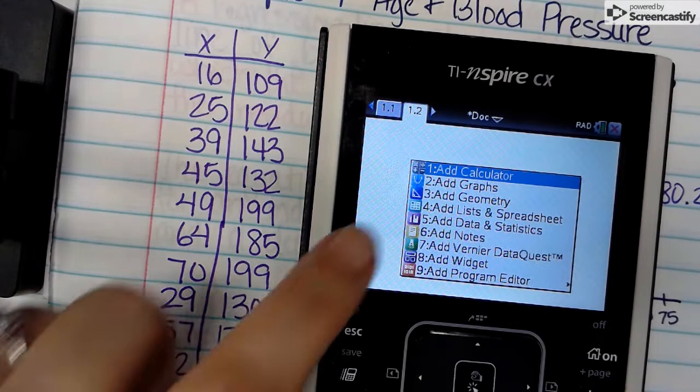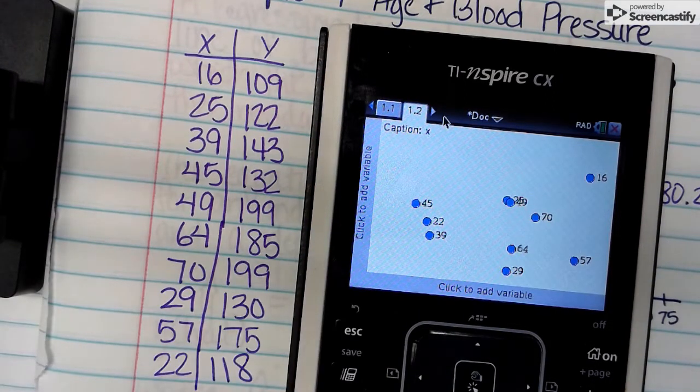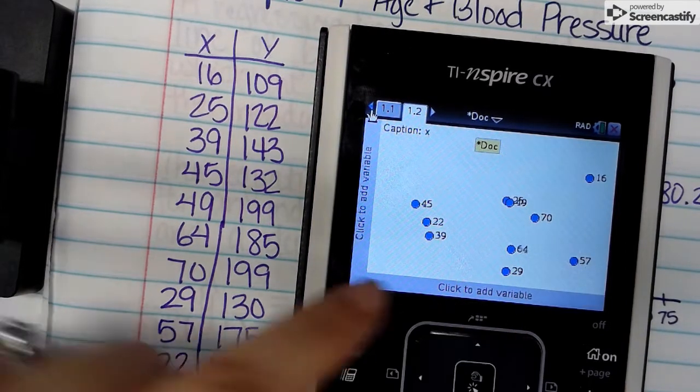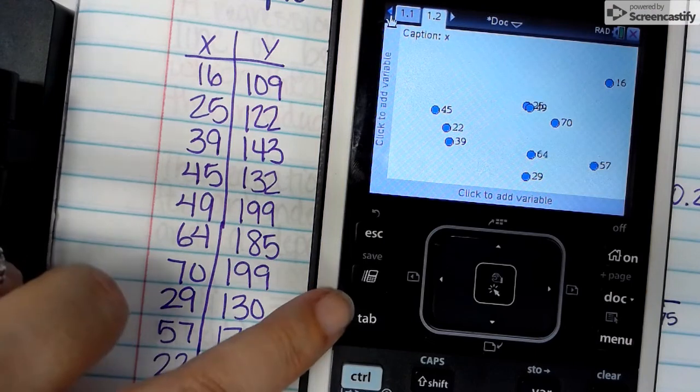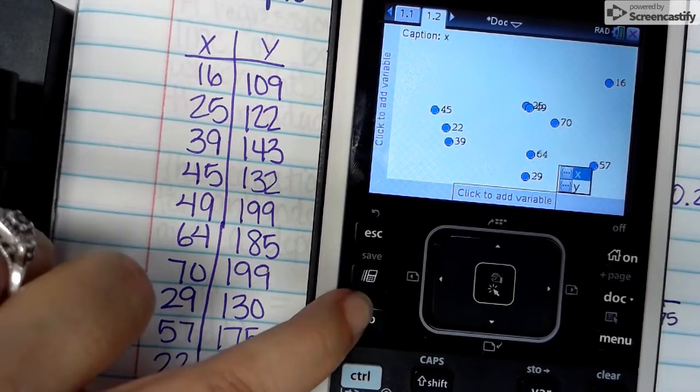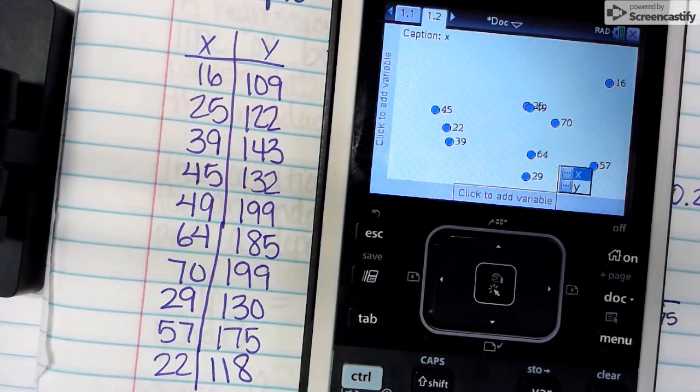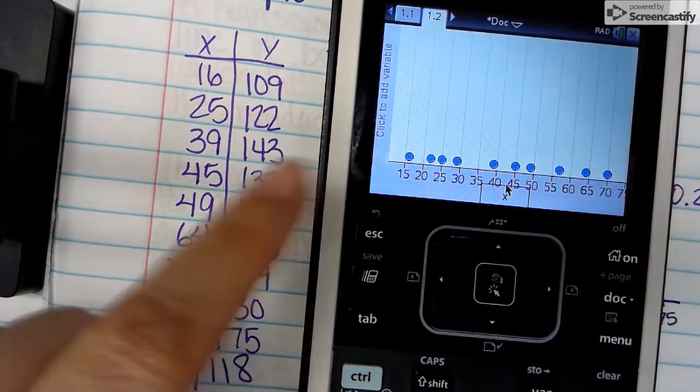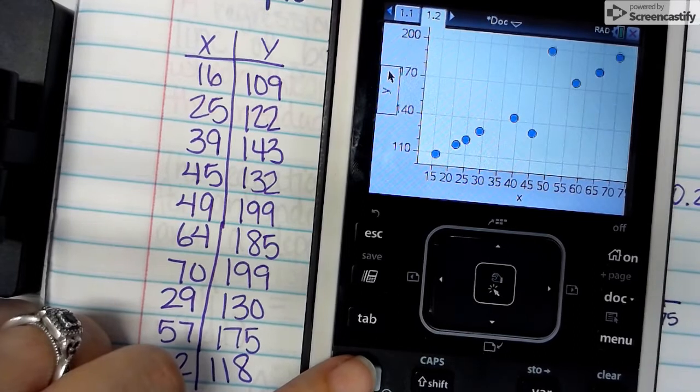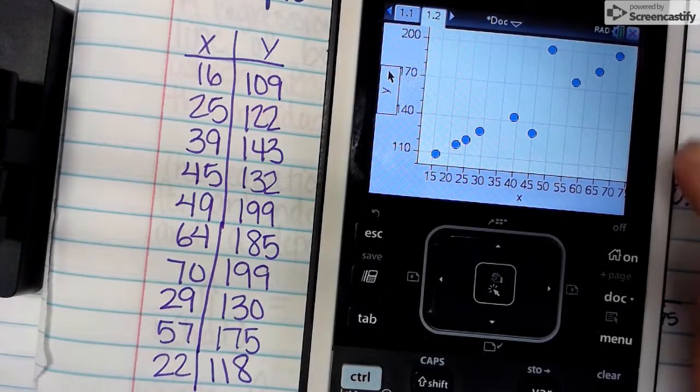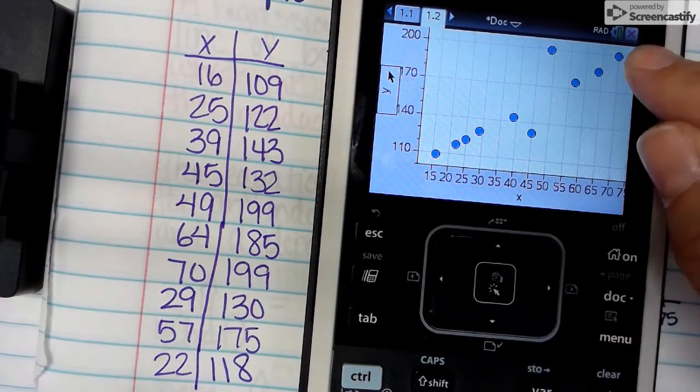All right, so the next step is we're going to push Control Doc and pick number 5. This gets our dots on there, but they're not in any order because we haven't told the calculator what the x and y variable is. So push the Tab button, which is right here above Control, and it will pop up a screen. We're going to pick x for the horizontal, push Tab again, go down to y and push Enter.